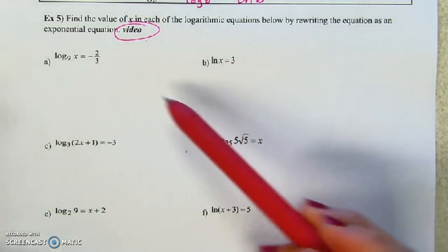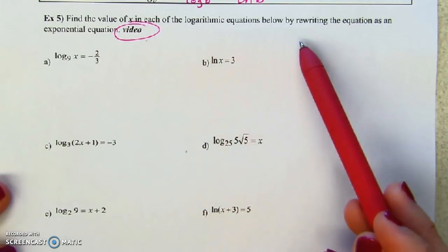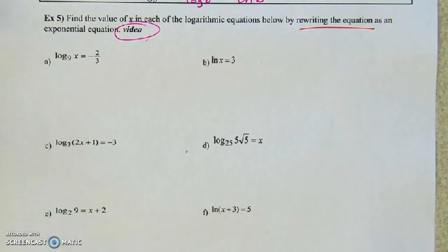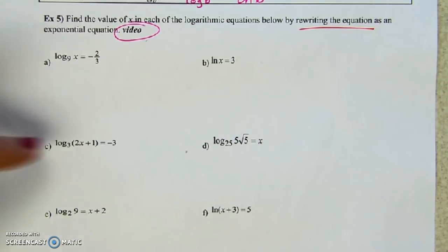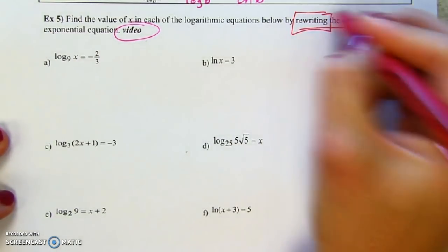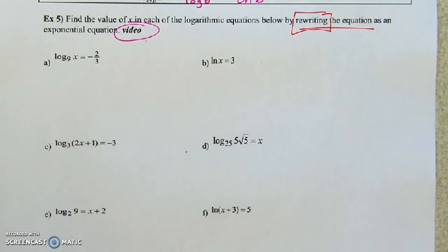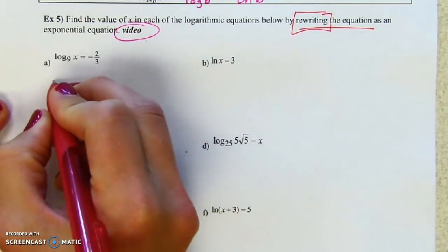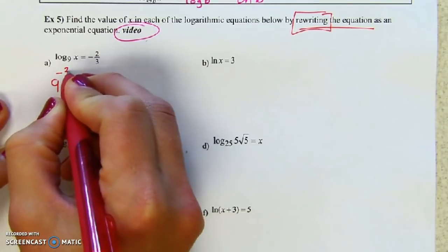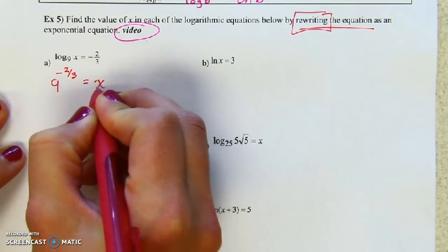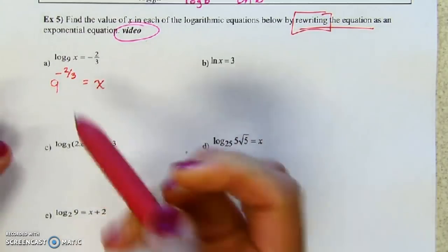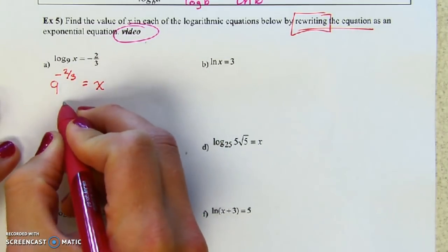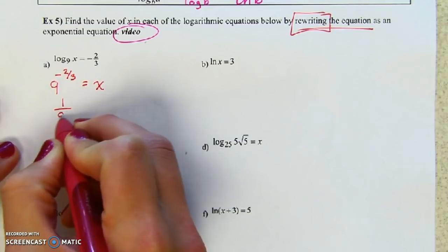Now we're going to solve for x by rewriting each logarithmic equation as an exponential equation. Rewriting is the big idea for these problems. So for example A: base is 9, to the power of negative 2/3 equals x — and there you found x. But we also learned last unit how to find that number. The negative exponent — do you agree it's going to move the base to the denominator?